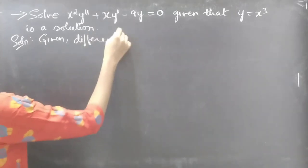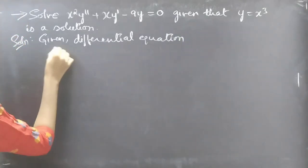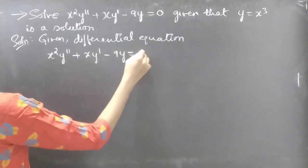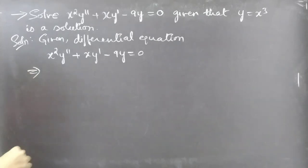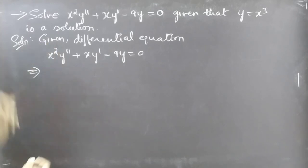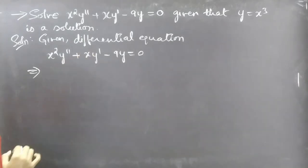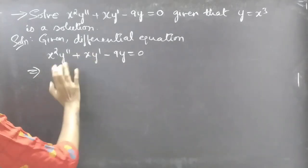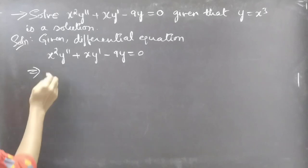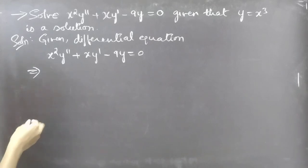Given differential equation: x² y'' + x y' − 9y = 0. Now we have to write the given differential equation in standard form. For that purpose we will make the coefficient of y'' equal to unity. So we will divide the whole equation by x², multiplying both sides by 1/x².